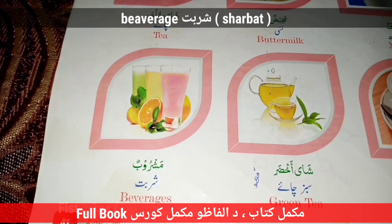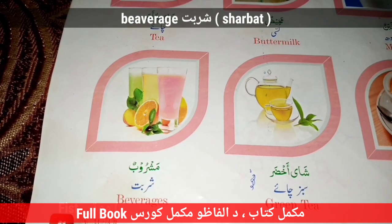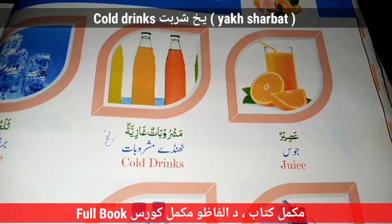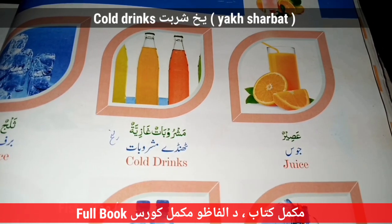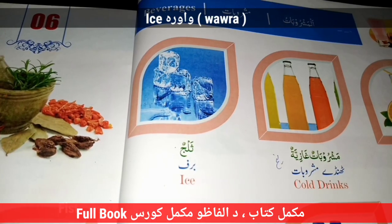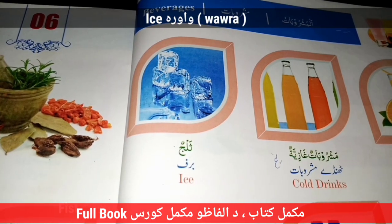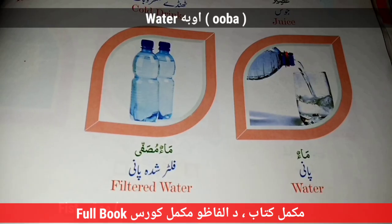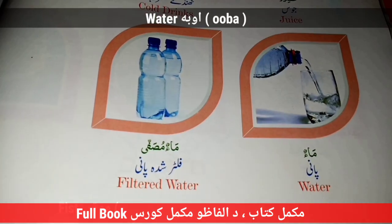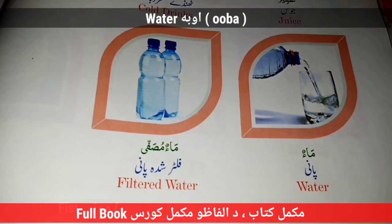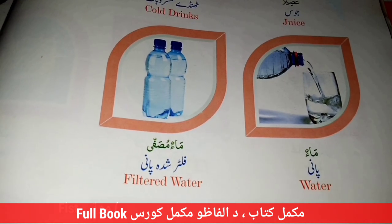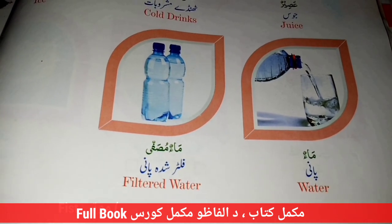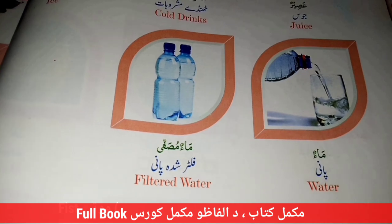Beverage — Shrubat. Juice. Cold Drinks — Ya Shrubatuna. Ice — Wawra. Water — Uba. Filtered Water — Filter Shri Uba.